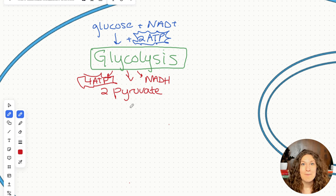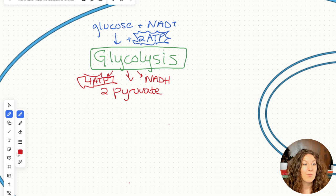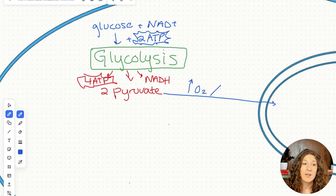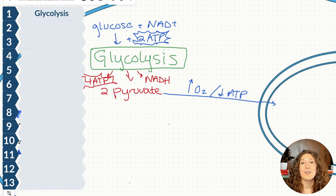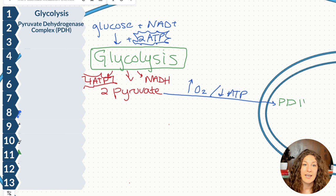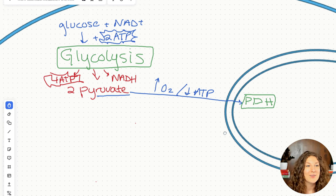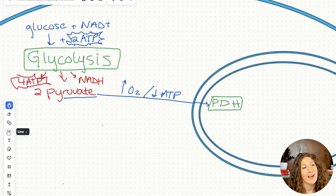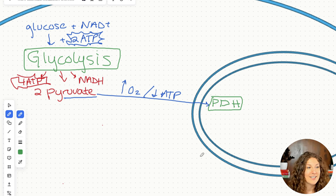Where pyruvate goes next depends on both our energy levels and our oxygen levels in the cell. Let's say we have high oxygen levels and low energy levels — we need energy, we have high oxygen, but we have low ATP. What we're going to do next is a pathway called the pyruvate dehydrogenase complex, or PDH. PDH is going to produce acetyl-CoA from our pyruvate.